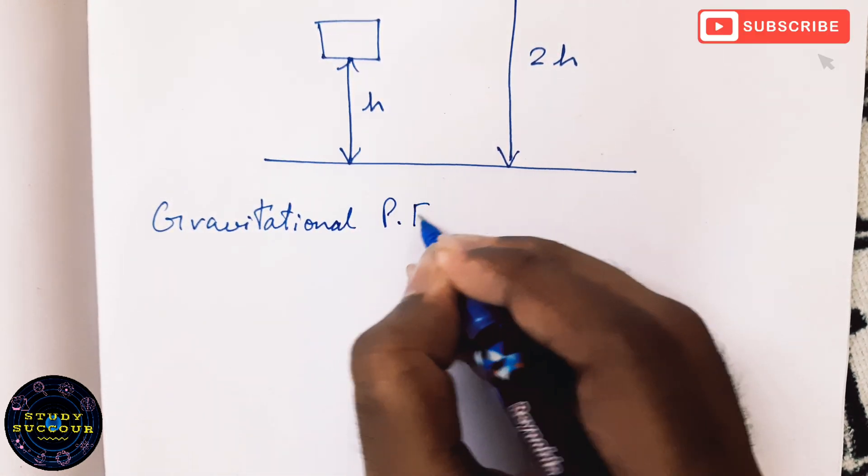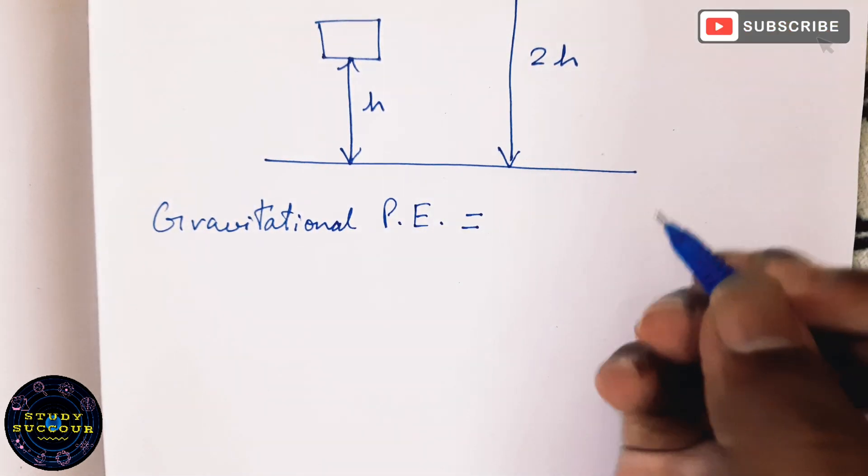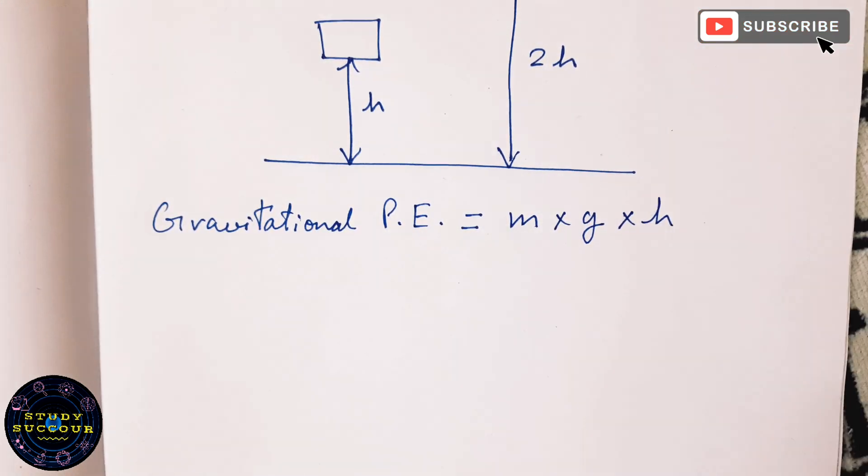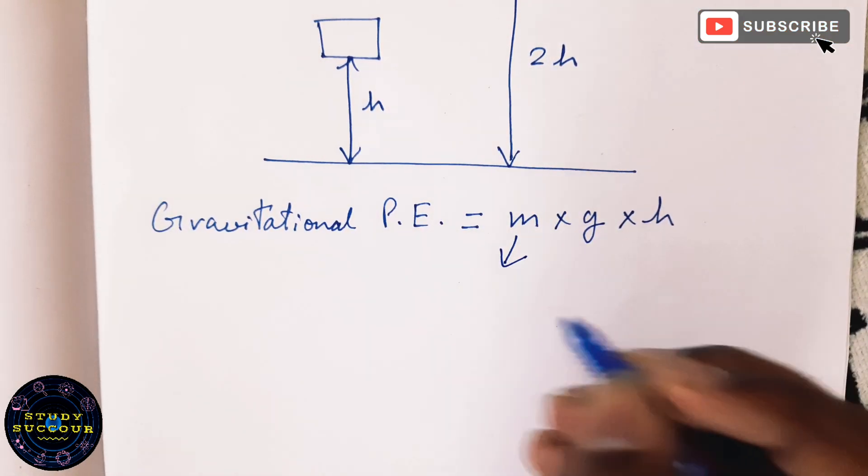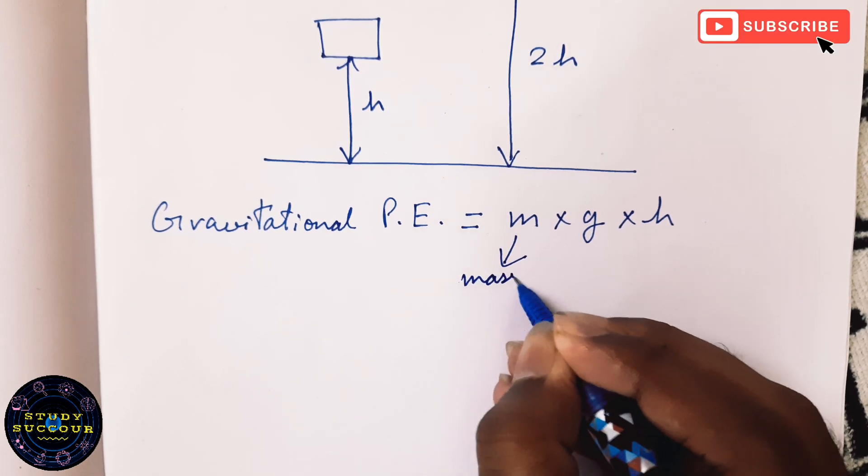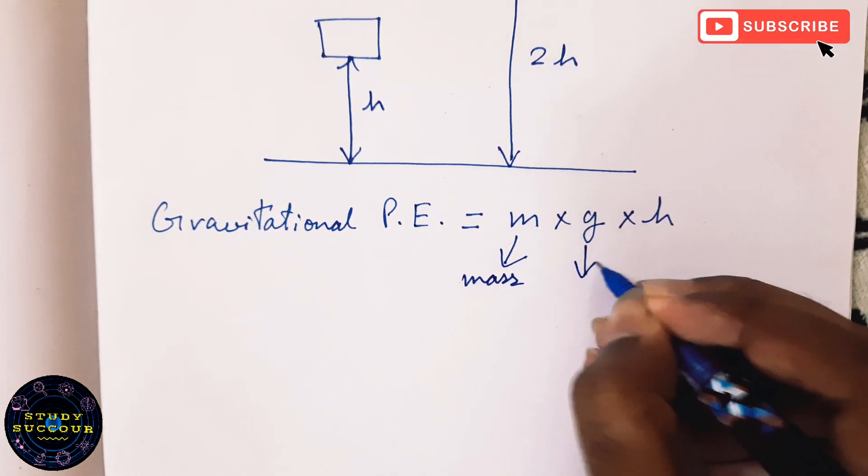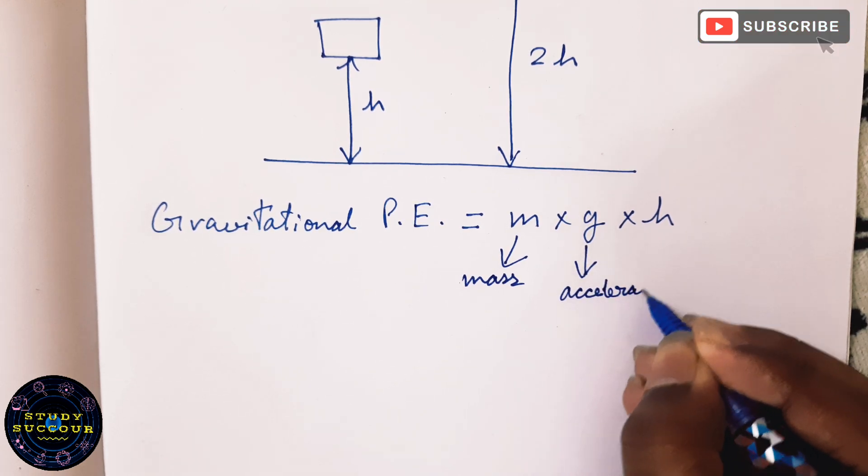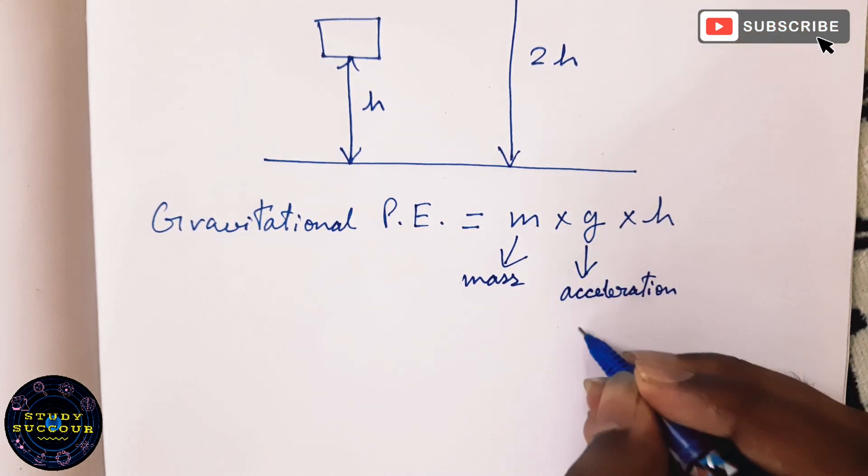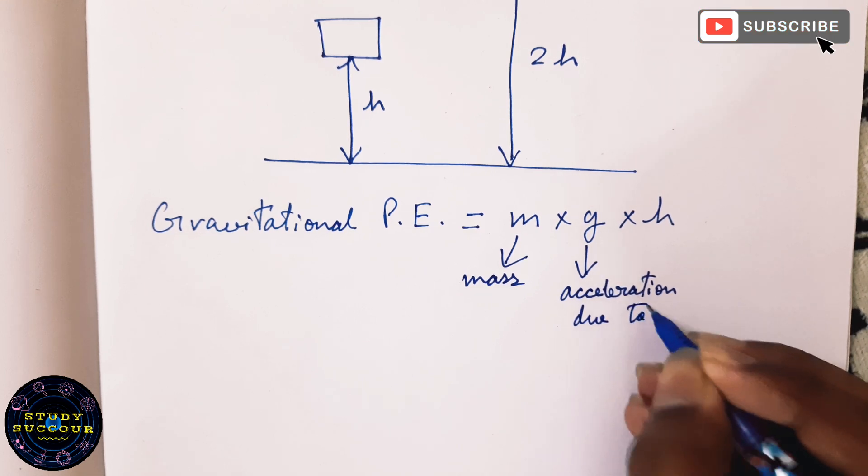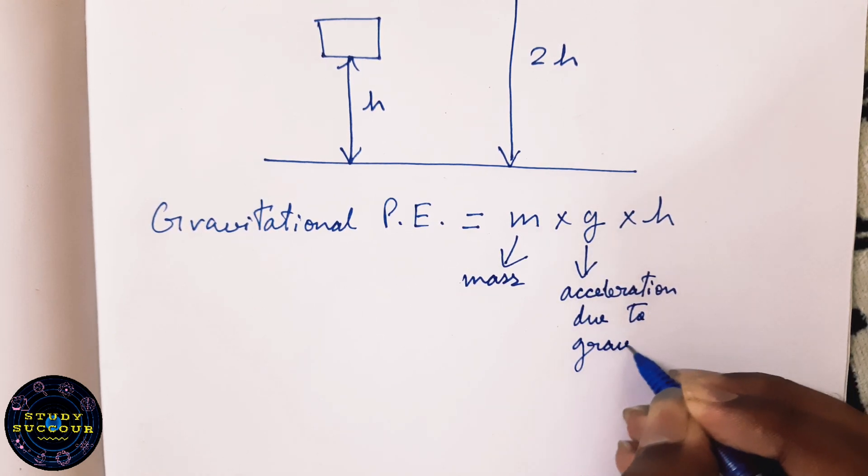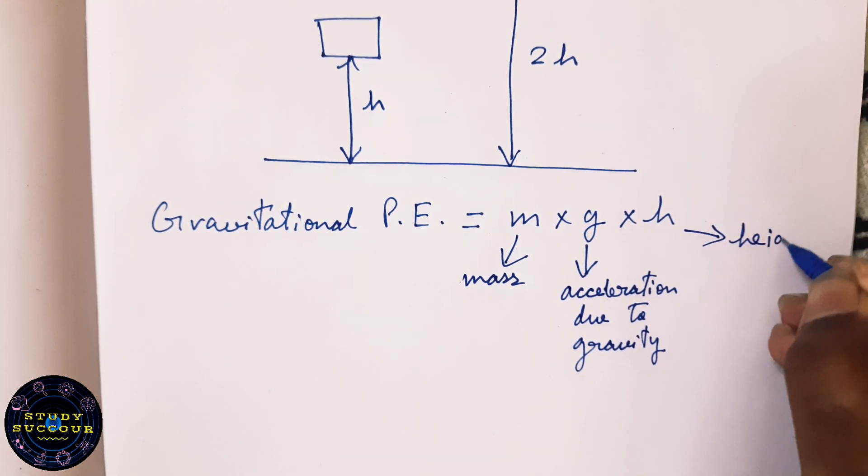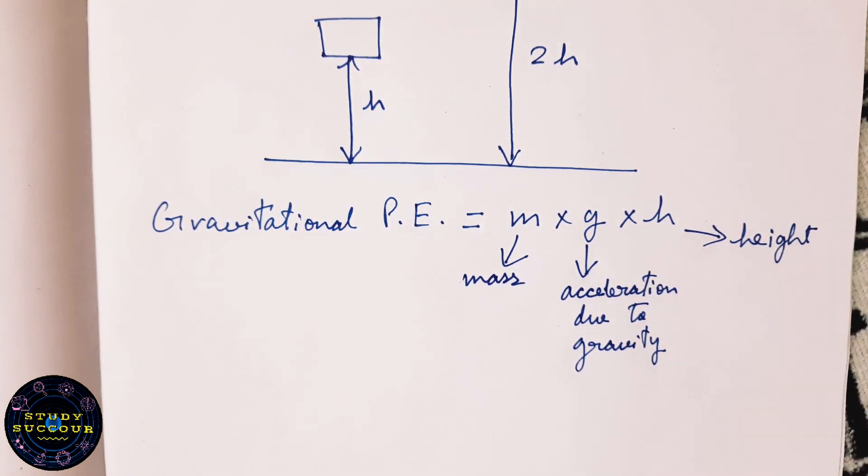Gravitational potential energy equals to M into G into H where M is nothing but the mass of the object or body, G is the acceleration due to gravity and H is nothing but the height at which the object is placed.